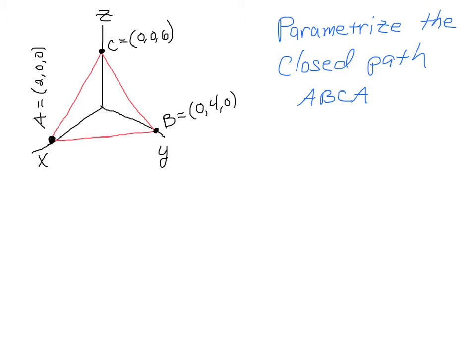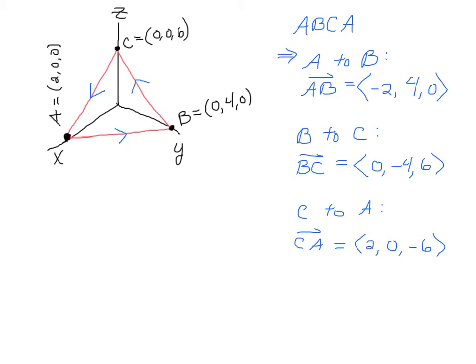Hello students, in this problem we're going to parametrize the closed path around this triangle. So we're going to start here at A, we're going to work our way to B, then work our way up to C, and then work our way around back to A again. So it's going to be a closed loop.